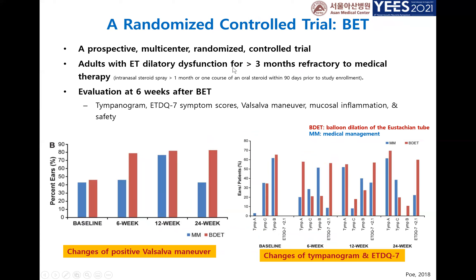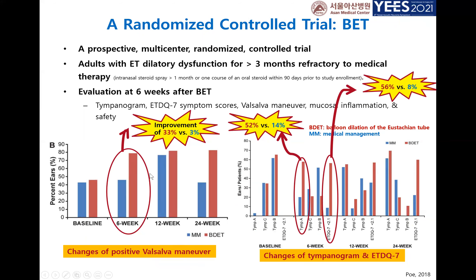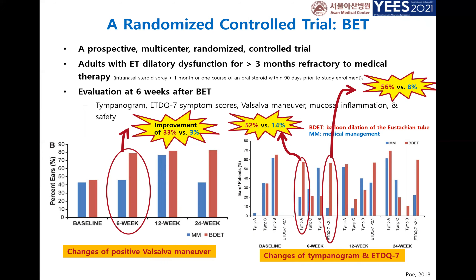As already mentioned, the randomized controlled trial showed balloon eustachian tube dilation was very successful; however, it was not successful for all patients. So we need another treatment modality for patients who do not respond to balloon dilation. We wanted to see how much the cartilaginous eustachian tube expands with the balloon, as we thought there might be some difference with different balloon diameters. We used fluoroscopy so we could measure how much the cartilaginous eustachian tube expanded.